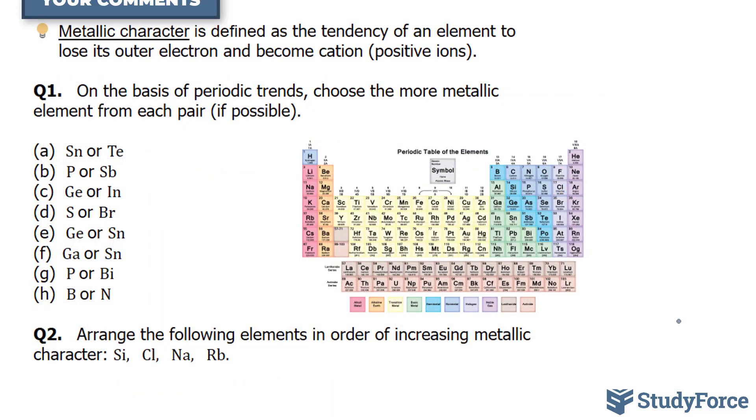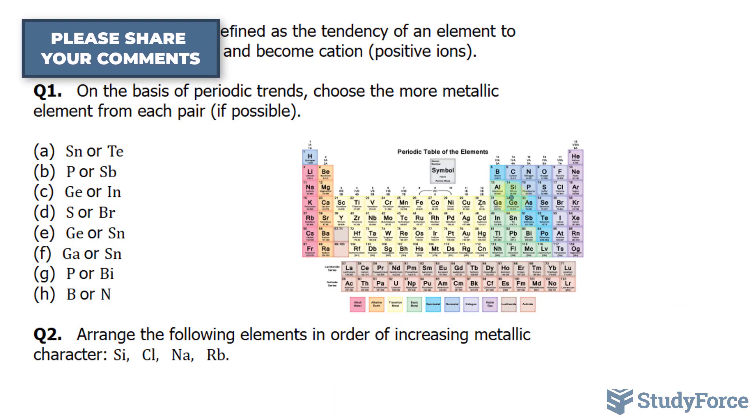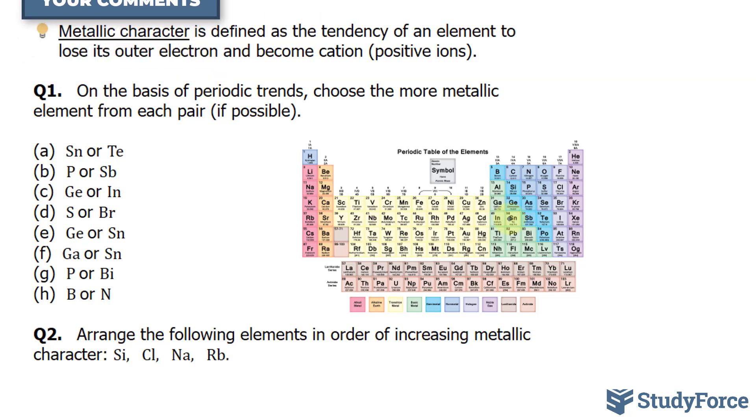Let's compare germanium and tin. Germanium is right here and tin is right underneath. Tin is lower than germanium in that column, so tin is more metallic.